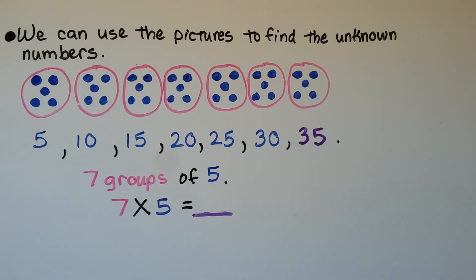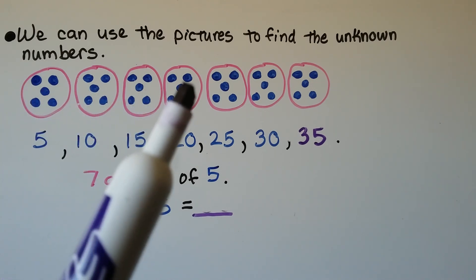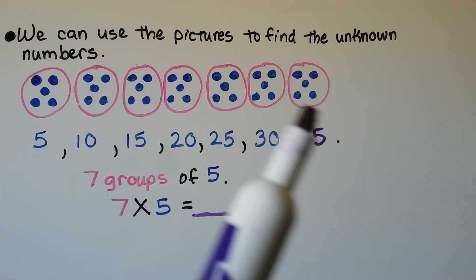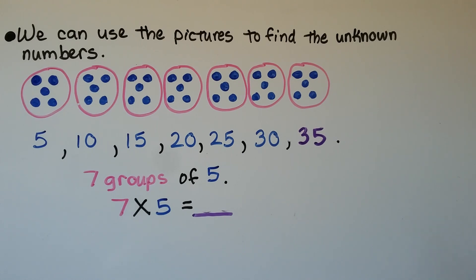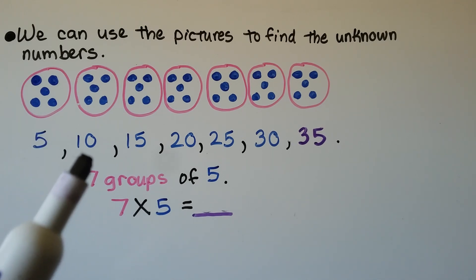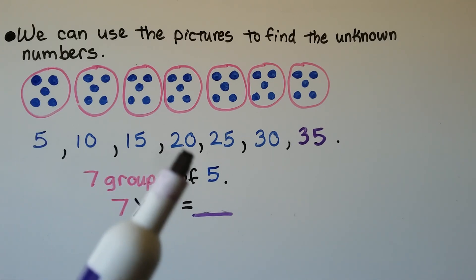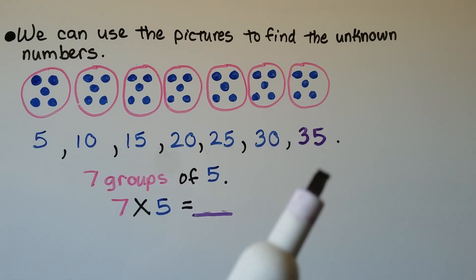We can use pictures to find the unknown numbers. We have 7 groups with 5 in each group, so we have 7 groups of 5. We can skip count by 5s: 5, 10, 15, 20, 25, 30, 35. So 7 times 5 is equal to 35.